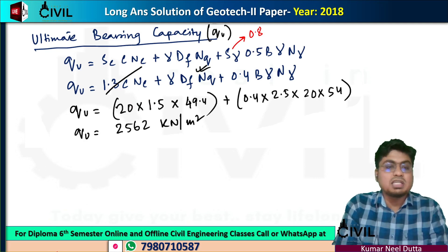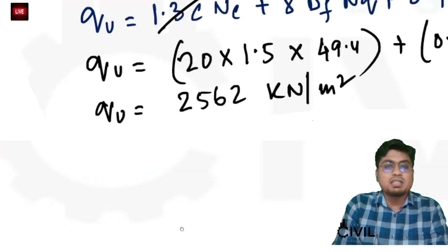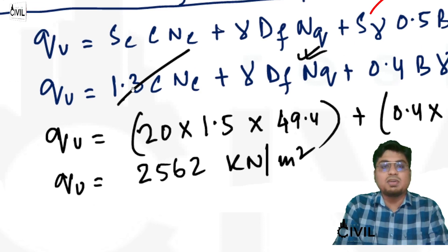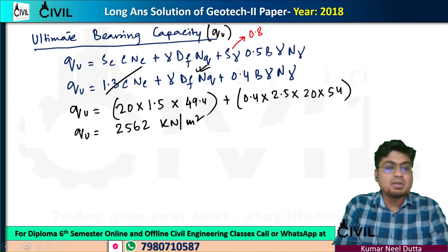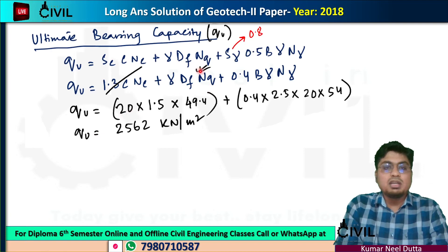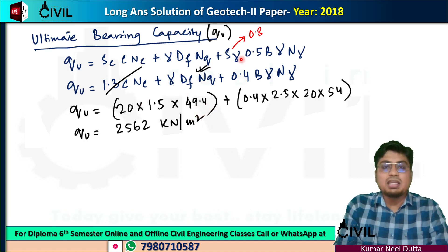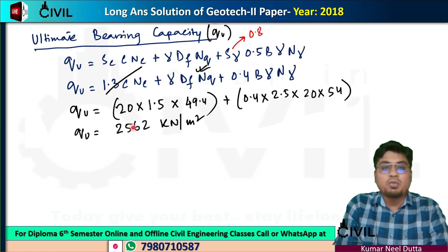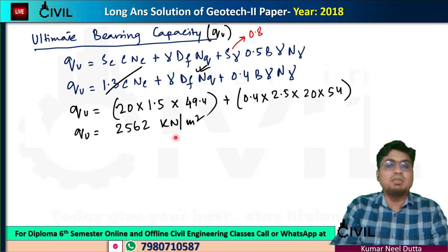Since c equals 0, the first part — 1.3·c·Nc — becomes zero. The second part is gamma·Df·Nq. Gamma is the unit weight and Nq value is 49.4. Next, we have 0.8 times 0.5, then 0.4. B is the width, and we have 0.5·B·gamma·N-gamma as the third term.